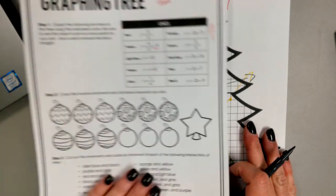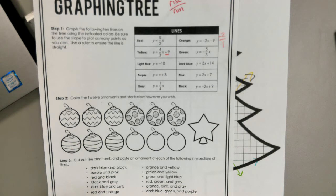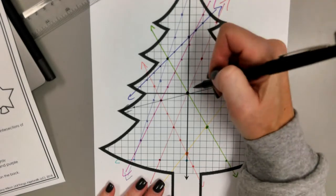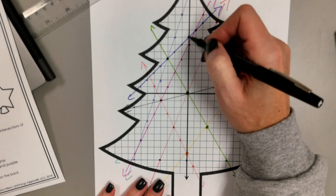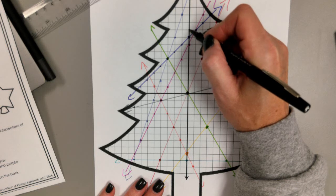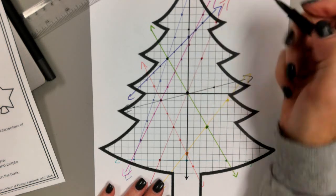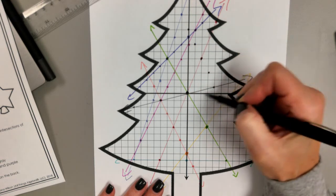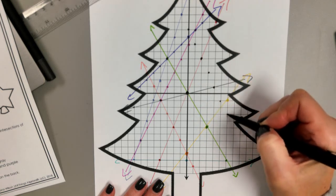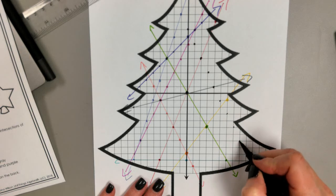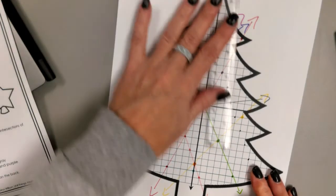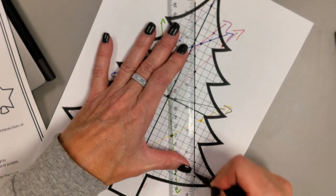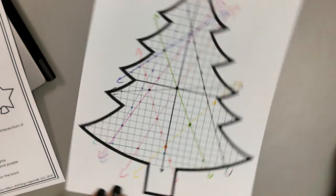And then I've got one more: black. And it says negative 2x plus 9. So we start at the 9. And it was negative 2x, so I'm going down 2 and over 1. Down 2, over 1. Down 2, over 1. And I'm just going to keep going.